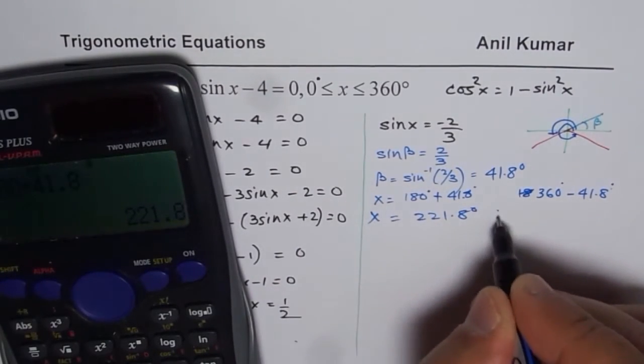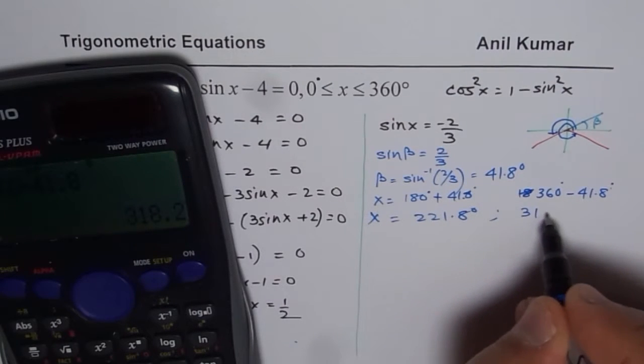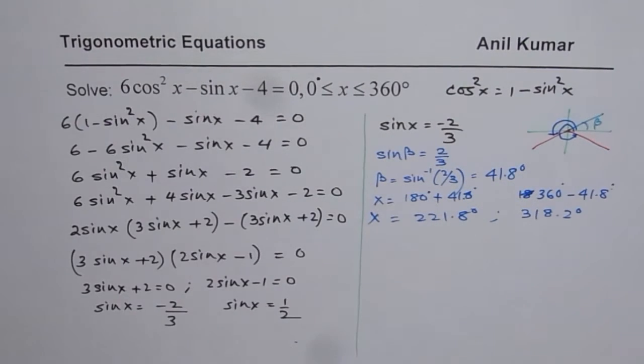So that is one answer. The other one is 360 minus 41.8, which is 318.2 degrees. So that is for the first factor.